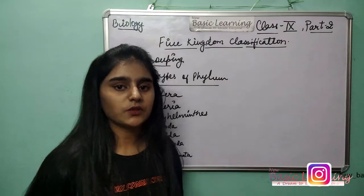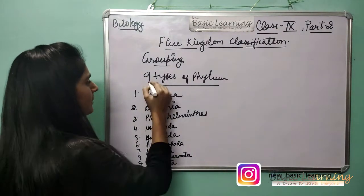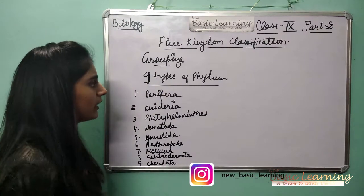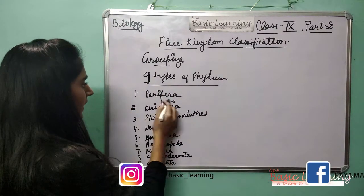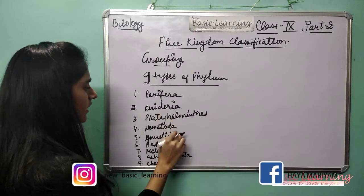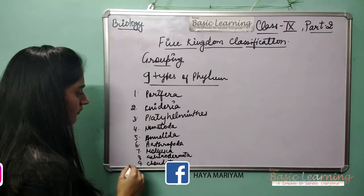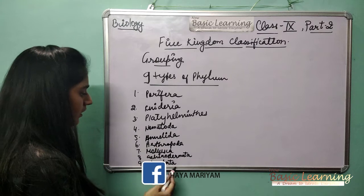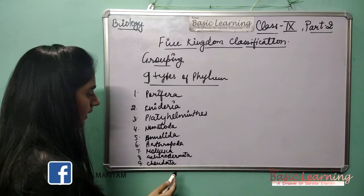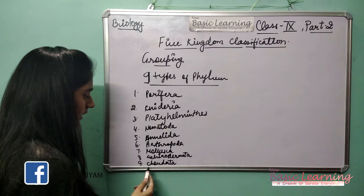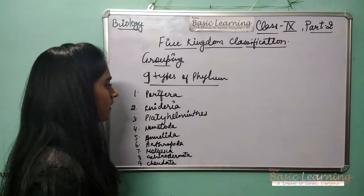Now about the grouping. In the grouping part, nine types of phyla come under this category: Phylum Porifera, Phylum Cnidaria, Phylum Platyhelminthes, Phylum Nematoda, Phylum Annelida, Phylum Arthropoda, Phylum Mollusca, Phylum Echinodermata, and Phylum Chordata. So nine types of phyla are there.